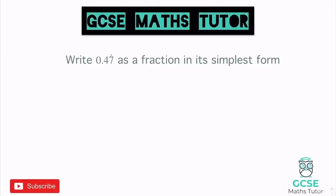Write 0.47 with the recurring dot above the 7 as a fraction in its simplest form. We're going to use a bit of algebra. The first thing we always do is write x equals the decimal: x = 0.47 recurring. It's important to think about what's actually recurring here — it's just the 7, so if written out it would be 0.4777... Now, when there's only one recurring decimal digit, we can multiply this value of x by 10.